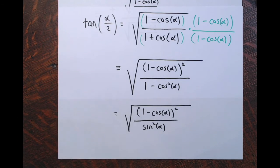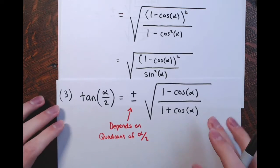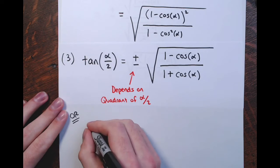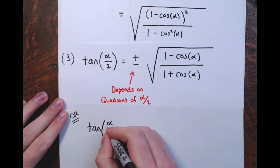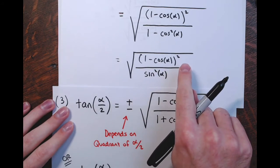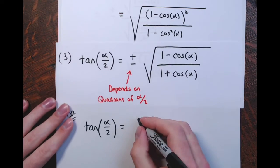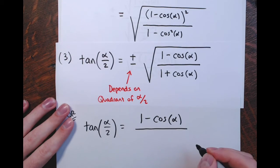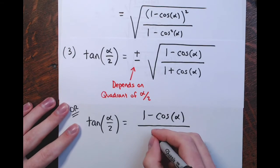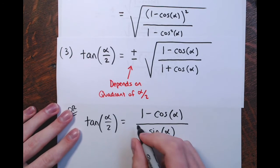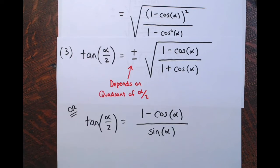That gives me the quantity one minus cosine alpha squared in the numerator. Then one plus cosine alpha times one minus cosine alpha in the denominator — that's one minus cosine squared alpha. Remember, multiplying conjugates gives a difference of squares. One minus cosine squared is sine squared. When you take the square root of both, this becomes one minus cosine alpha divided by sine alpha — it gets rid of these squares.